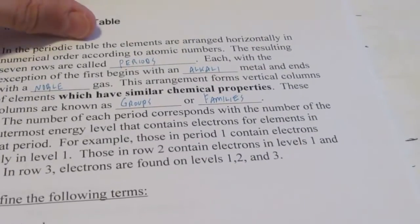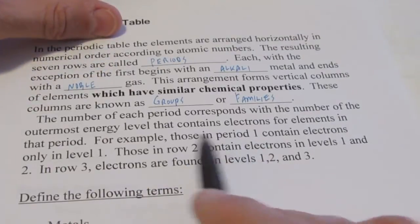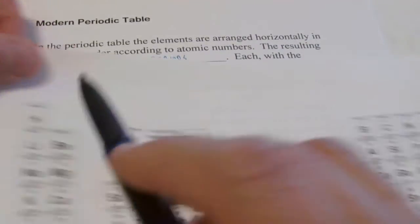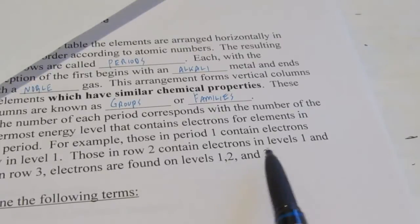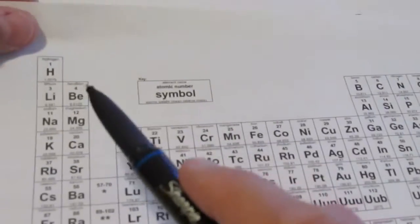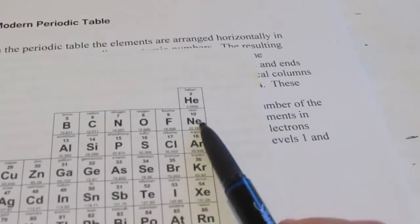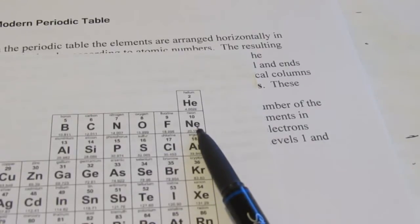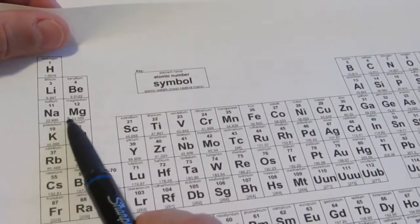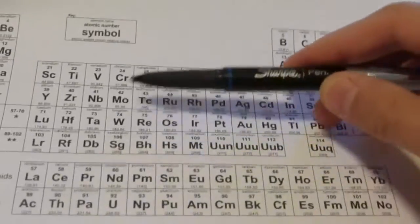Now, the number of each period corresponds with the number of outermost energy levels that contain electrons for the element in that period. For example, those in period number 1 contain electrons only in the first energy level. Hydrogen, 1s1. Helium, 1s2. They only have electrons in the first energy level. Those in row 2 contain electrons in energy level 1 and energy level 2. Lithium's configuration, 1s2, 2s1. Beryllium, 1s2, 2s2. And we can go all the way across to neon 1s2, 2s2, 2p6. So we have electrons in the first and second energy levels. Those in row 3 have electrons in the first, second, and third energy levels. Those in row 4 have electrons in the first, second, third, and fourth energy levels, and so on down the table.